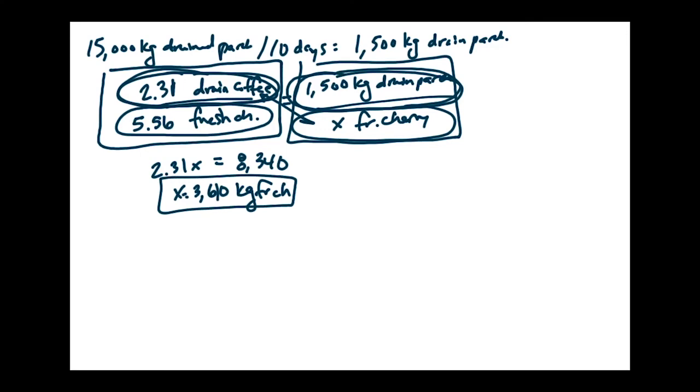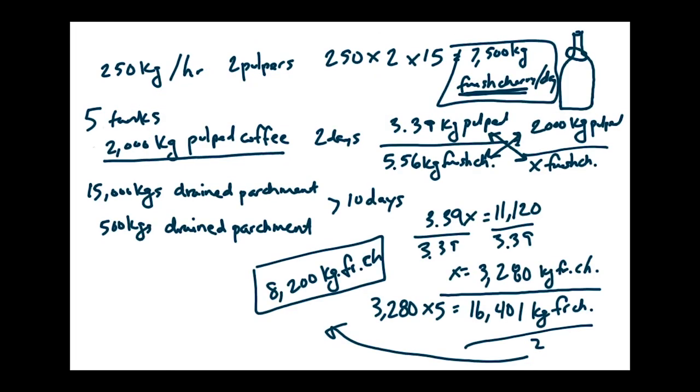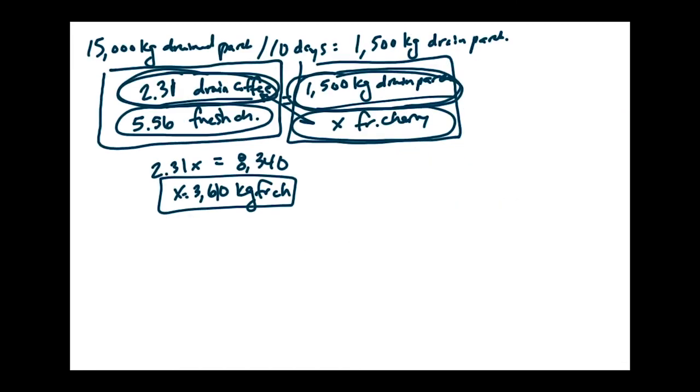Now that was just the drying patio. Now let's look at the drying beds. The drying beds said 500 kilograms of drained parchment per bed. And how many beds do we have? Well, let's look back at our problem. We have 20 raised beds for drying. So we have 20 beds, 500 kilograms of drained parchment per bed for 10 days.